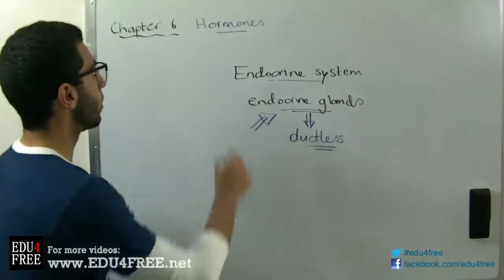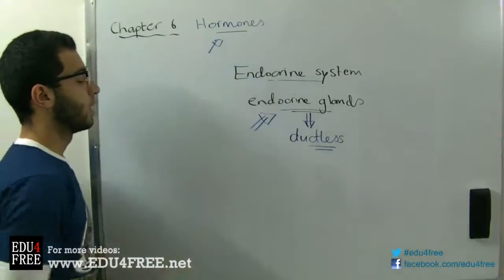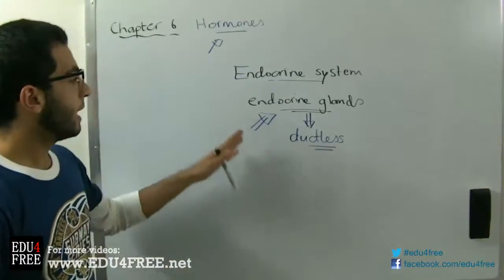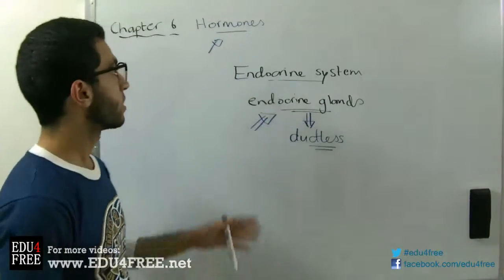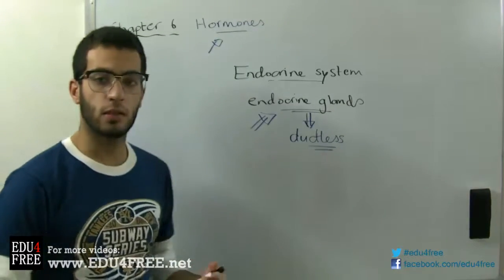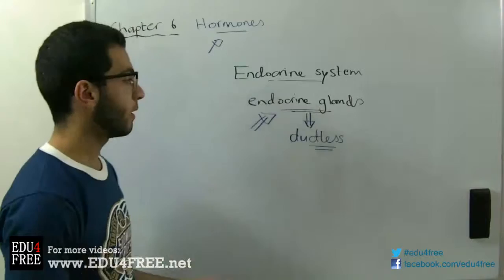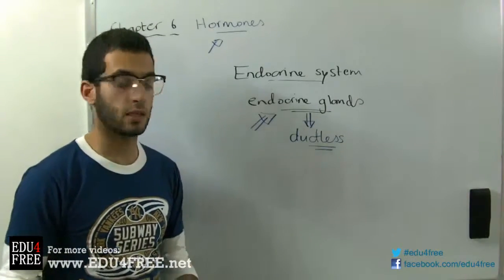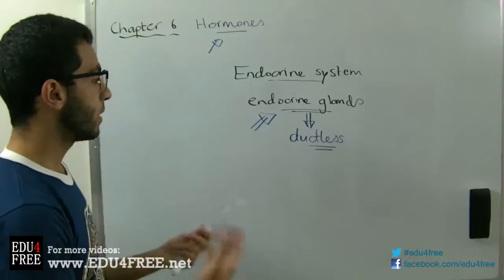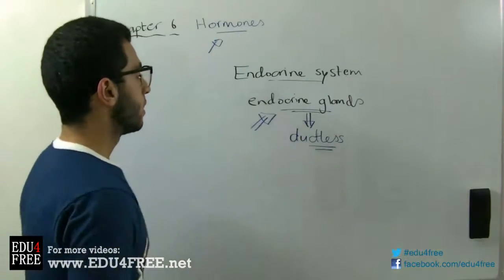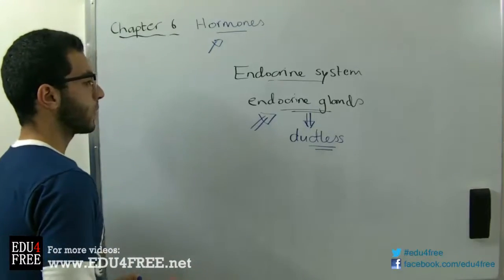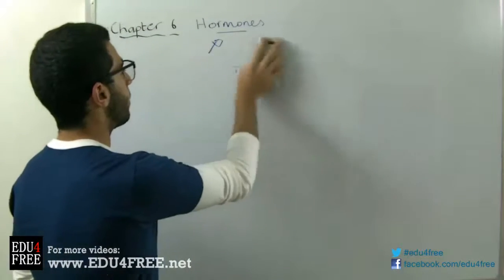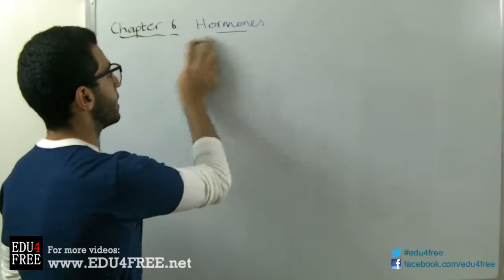These secretions are called hormones. Any disturbance in the secretion of a hormone actually affects the organ that is influenced by this hormone — it affects its growth rate and affects its function, as we will learn later. That's it about the endocrine system.